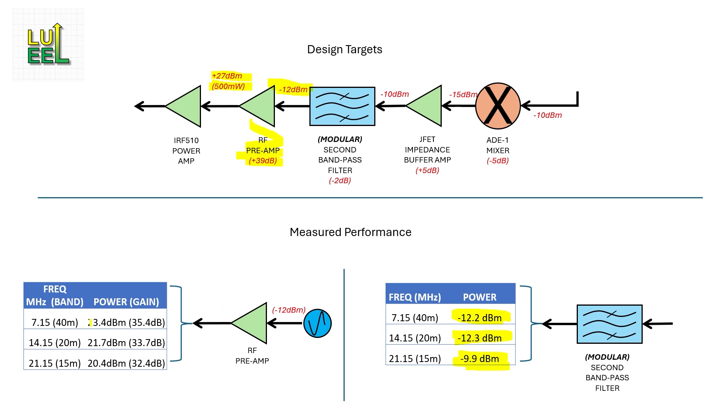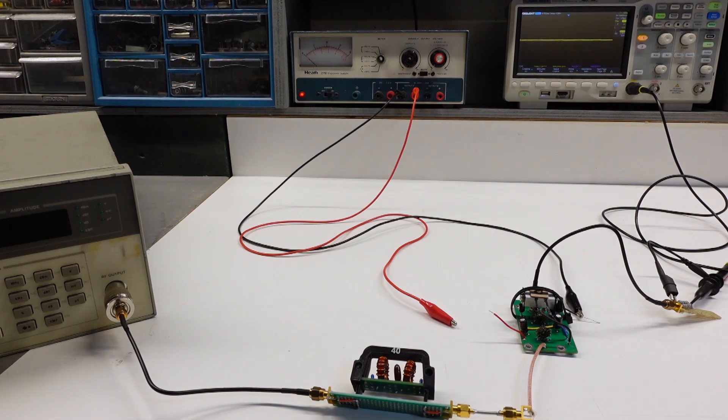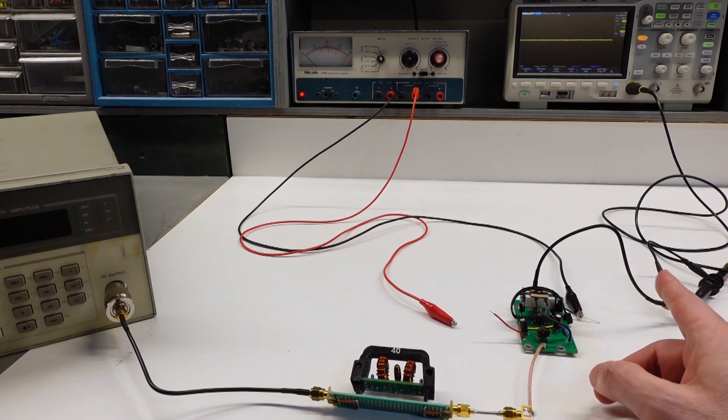But look at the output: 23.4 on 40, 21.7 on 20, and 20.4 on 15. I do expect the power to drop at higher frequencies, but even 23.4 is not enough to drive my final amplifier. I need to do something here. I'm coming up short.